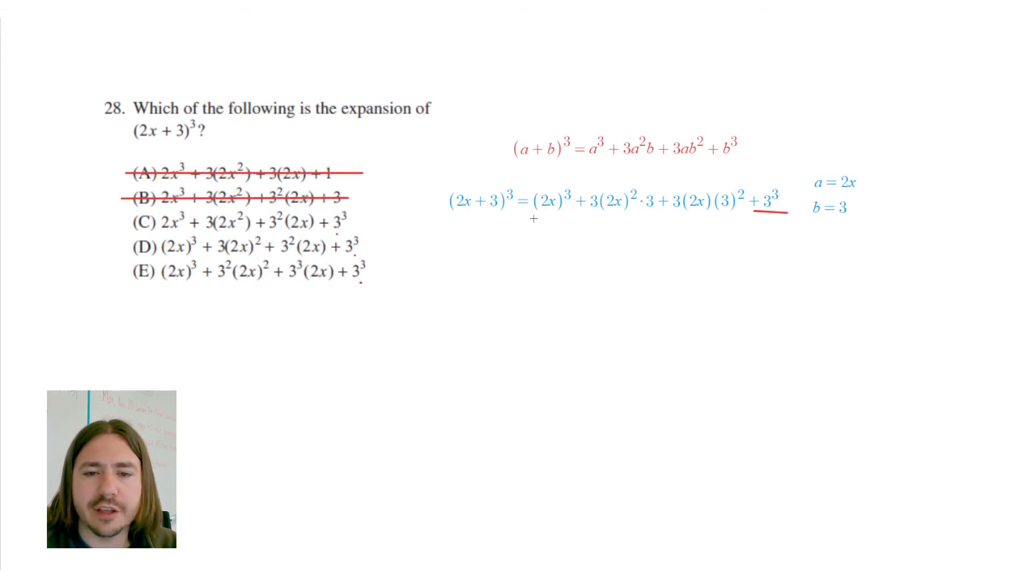The next thing I'm going to look at is the first term. So with the first term, I've got 2x, and that quantity is being cubed, not just the x. So you can see that we've got that here and here, but with c, they are missing the parentheses around the 2x. So it can't be c.